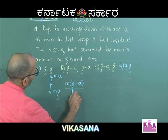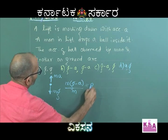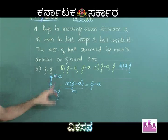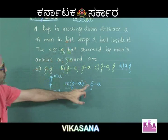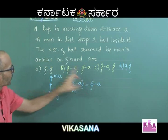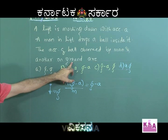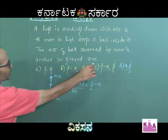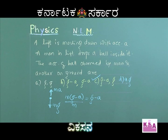If you divide by mass, you get the acceleration as G-A. Therefore, the acceleration of the ball in the frame of reference of the lift is G-A, and the acceleration of the ball in the frame of reference of the ground is G. So the answer is G-A and G.